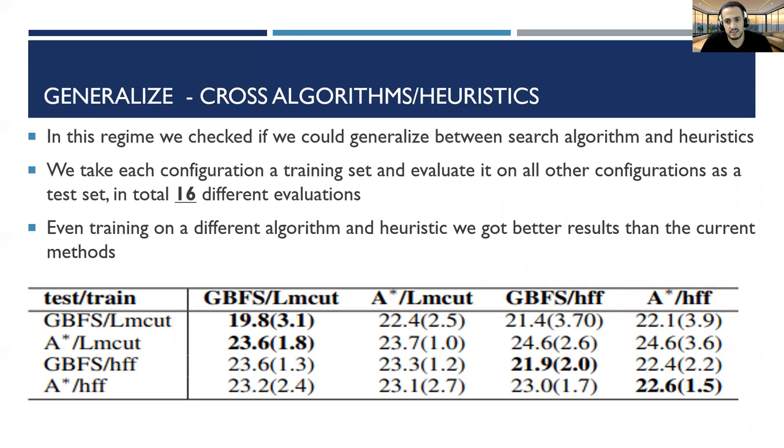In our last part of our evaluation, we wanted to understand how good the network is at generalization between different planners. We took all four configurations from A-star or GBFS with LMCAT and HFF, and in total, we have four configurations for train and four configurations for test. We ran training using one configuration and test using another. Total 16 instances. The results are in the table. The rows are the test set and the columns are the train set. For example, first row with second column is training on A-star with LMCAT and test on GBFS with LMCAT.